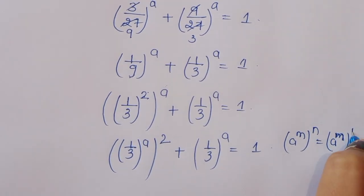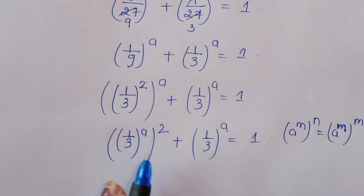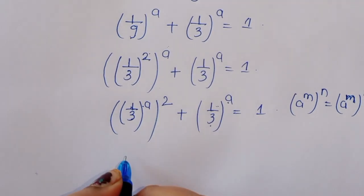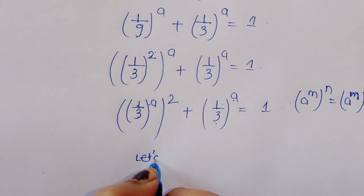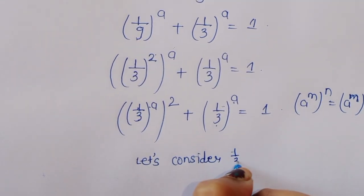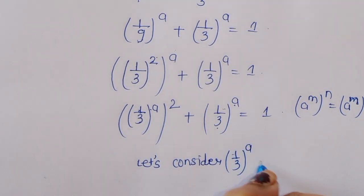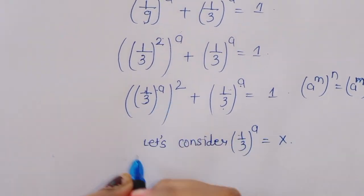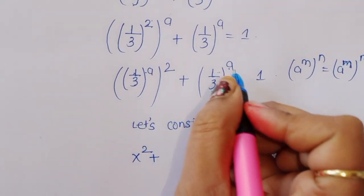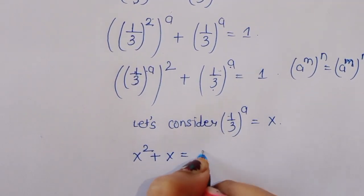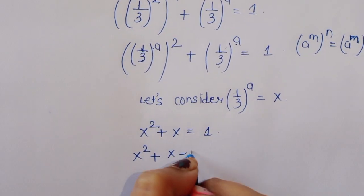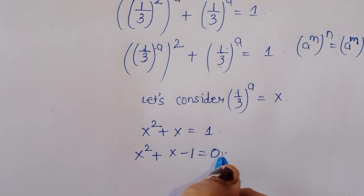So we get 1 upon 3 power a squared plus 1 upon 3 power a is equal to 1. Now let's consider 1 upon 3 power a equal to x. Then we can write x squared plus x minus 1 is equal to 0.